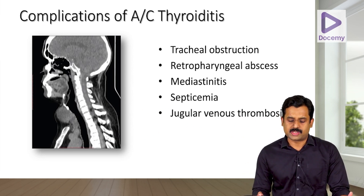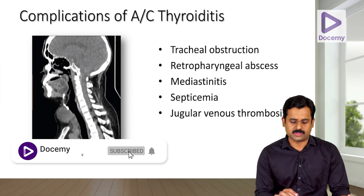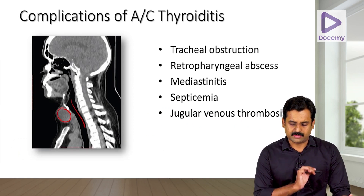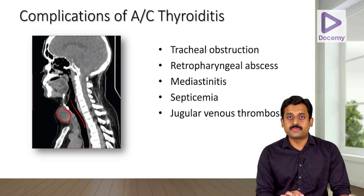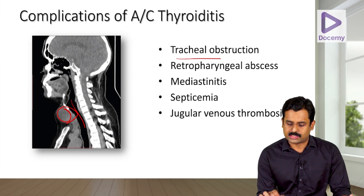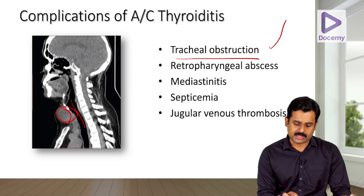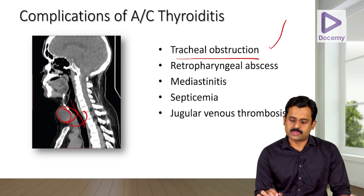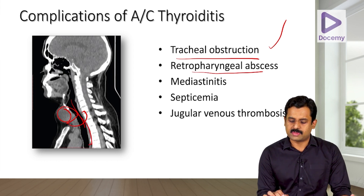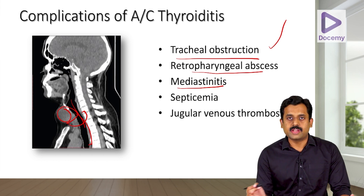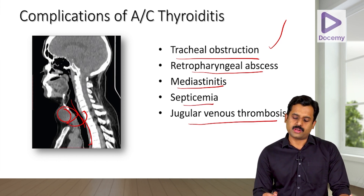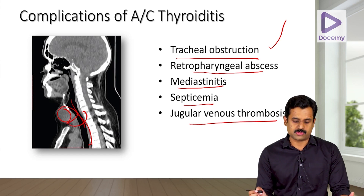If acute thyroiditis is untreated, complications can occur. The inflamed thyroid gland can enlarge and compress the trachea, producing tracheal obstruction. It can track posteriorly causing a retropharyngeal abscess, track downwards causing mediastinitis, invade the bloodstream causing septicemia, and at a later phase cause jugular venous thrombosis.